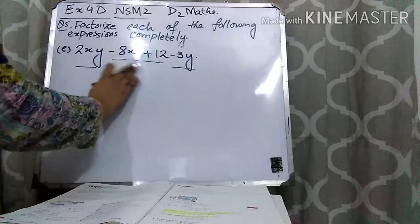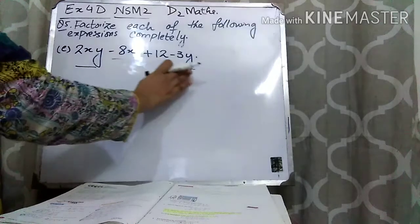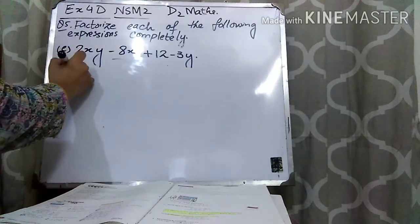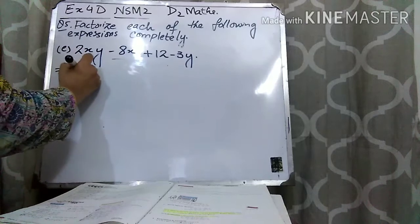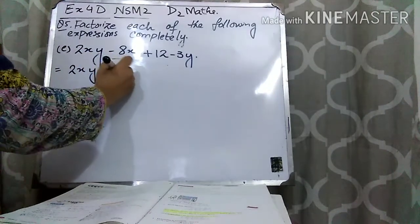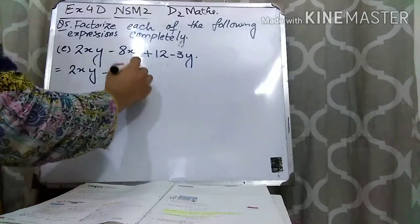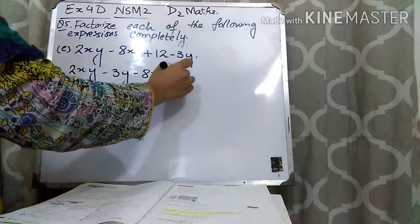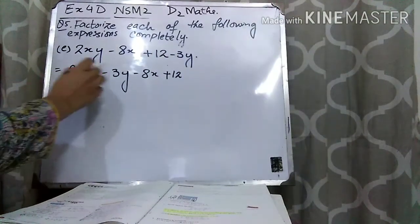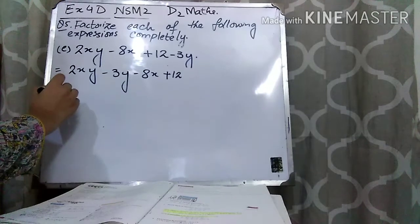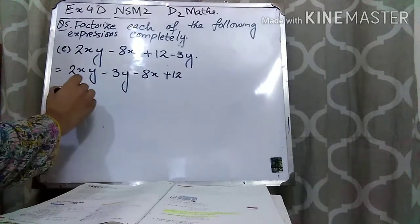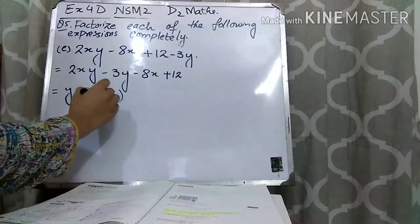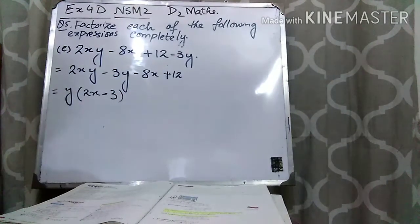So our purpose is to make the brackets the same. That's why I will write the first and the last term together to get y common. This is how you write it. And now write minus 8x plus 12. From these two terms you can take y common. So what will be left? 2x minus 3.